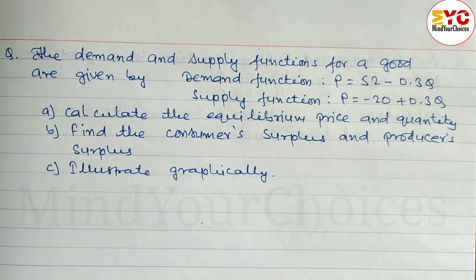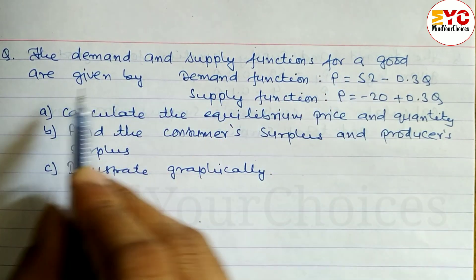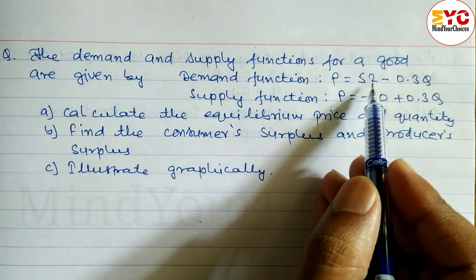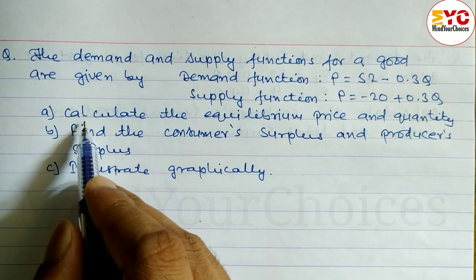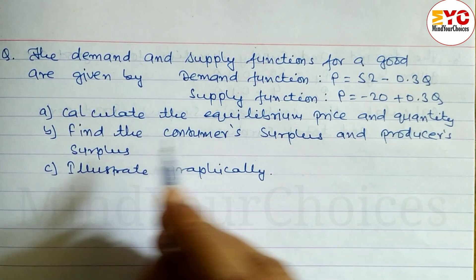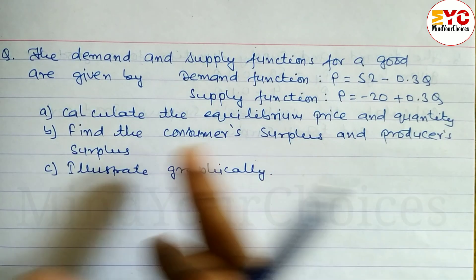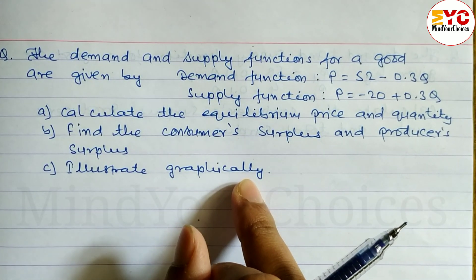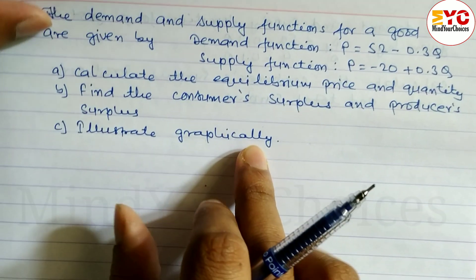Your question: system of linear equations and its application. What are we going to do? The demand and supply functions for our goods are given. We have to calculate the equilibrium price and equilibrium quantity. Next we have to find out the consumer surplus, producer surplus, and we have to illustrate in a graph. So let's take a start.